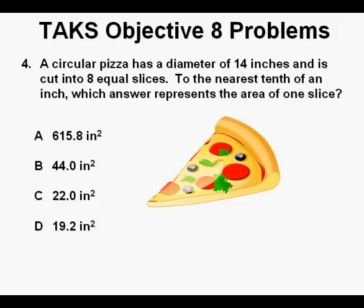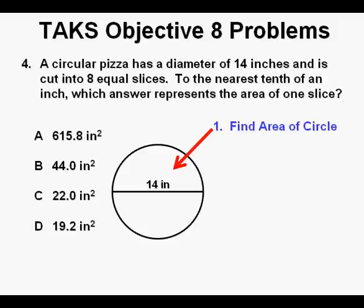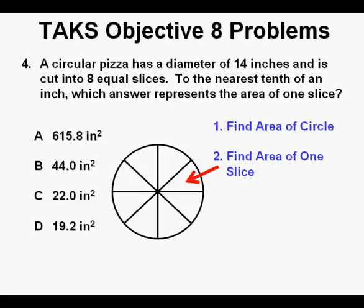Problem 4. A circular pizza has a diameter of 14 inches and is cut into 8 equal slices. To the nearest tenth of an inch, which answer represents the area of one slice? This problem is just a multi-step area problem. Conceptually, we need to find the area of the circle described in the problem, a circle with a diameter of 14 inches. And then we need to find the area of one slice by dividing the total area by 8, since there are 8 equal slices.